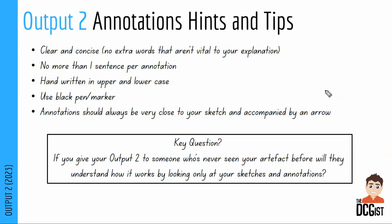Looking at annotations: going on from having each sketch with a purpose, they also need annotation that explains to the person what that purpose is. You want them to be clear and concise — no extra words that aren't vital to your explanation, and no more than one sentence per annotation. You want them to be concise, to the point, and easy to understand. You want annotations to be handwritten in upper and lowercase — similar to the font used on this slide — rather than all uppercase, which is hard to do consistently. You're much better doing it in upper and lowercase closer to your natural handwriting.